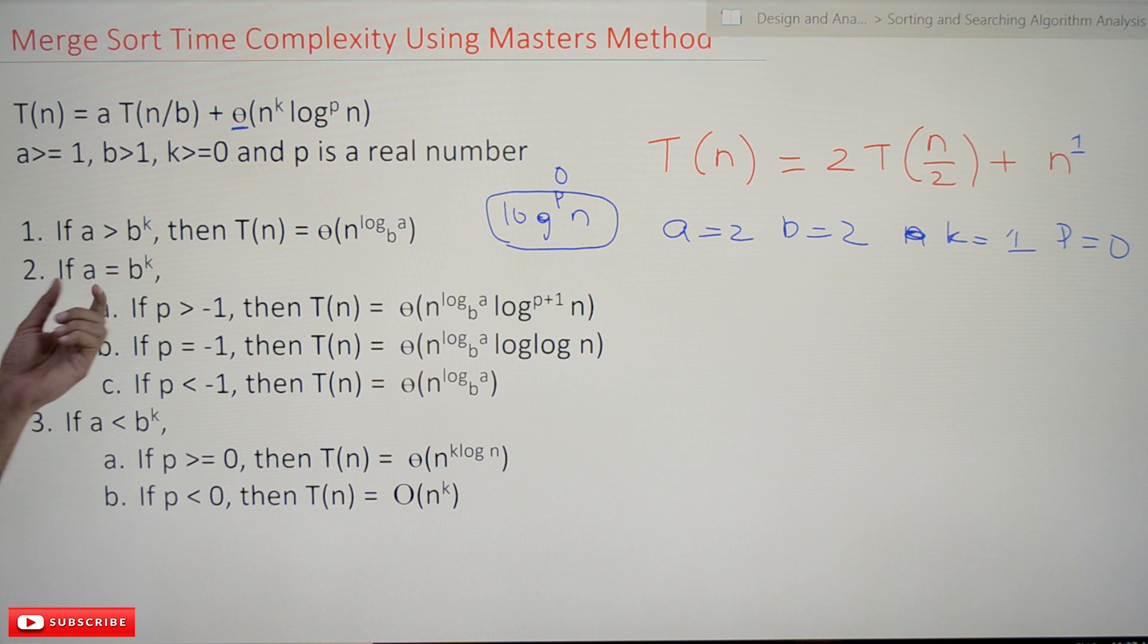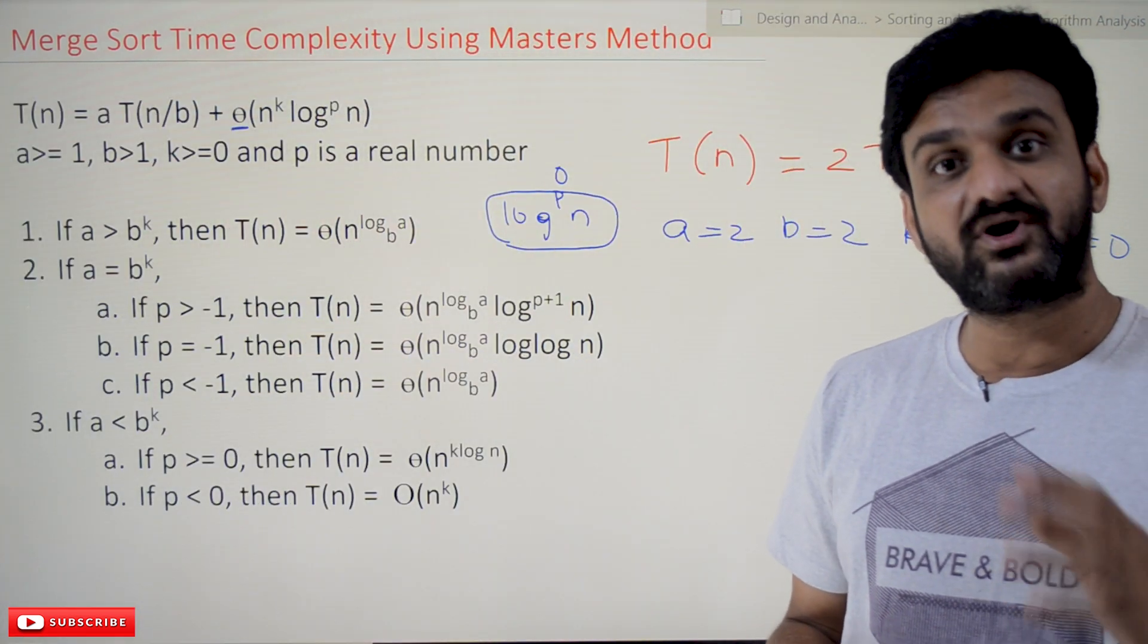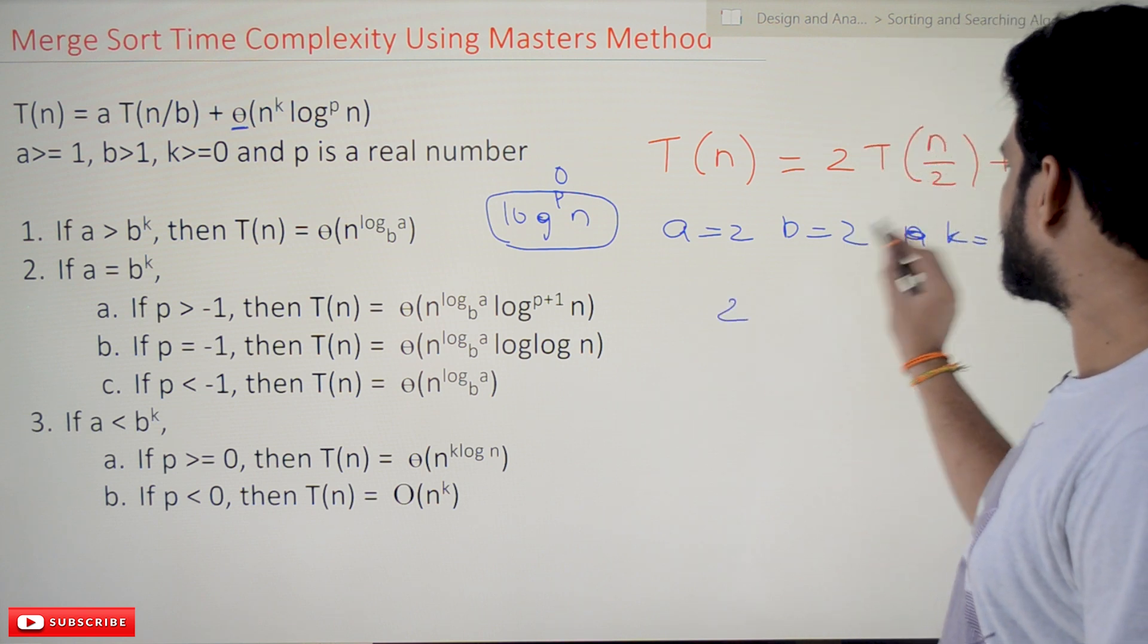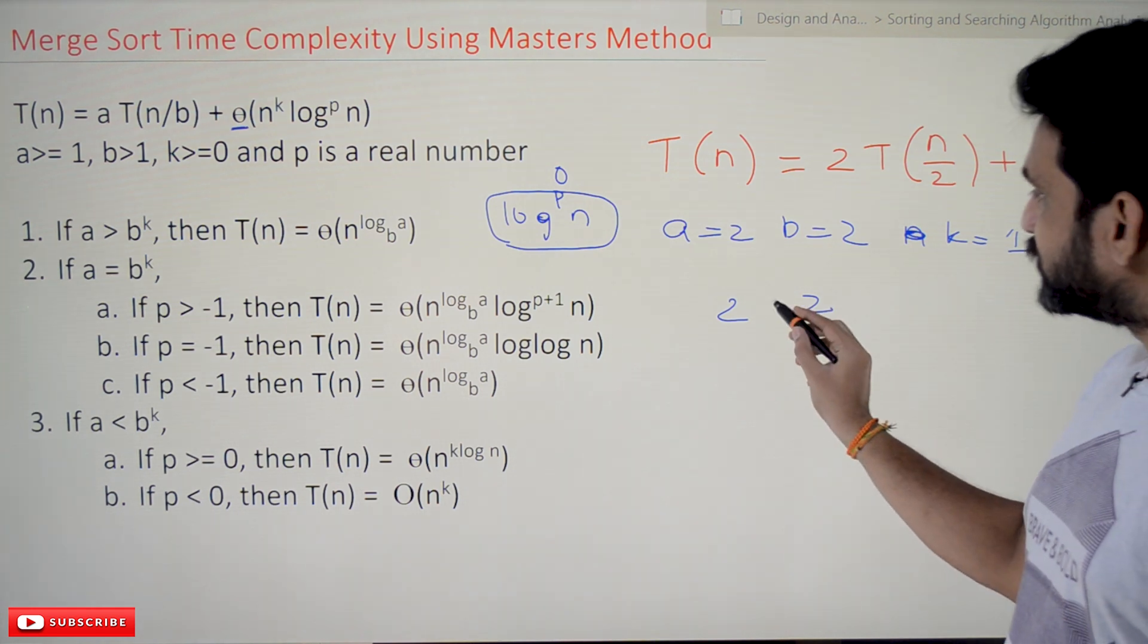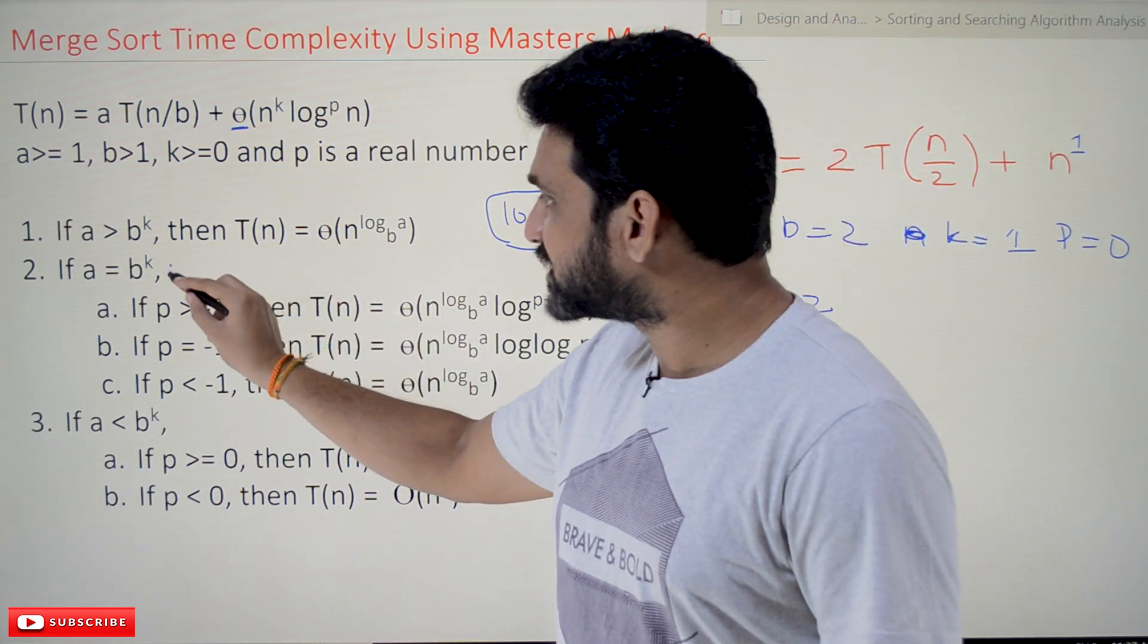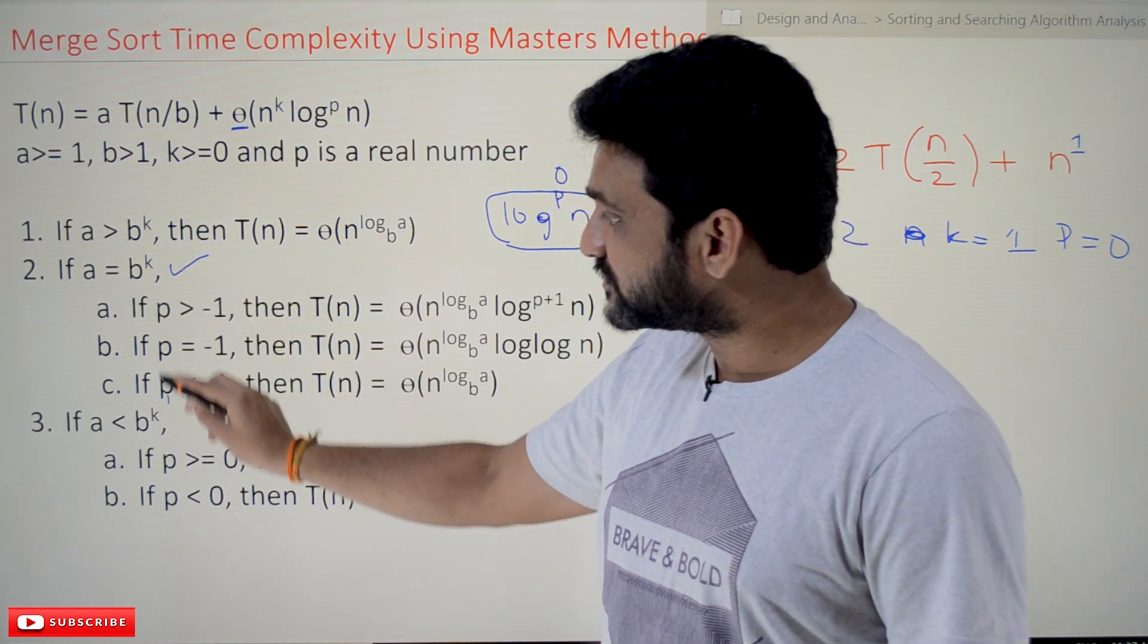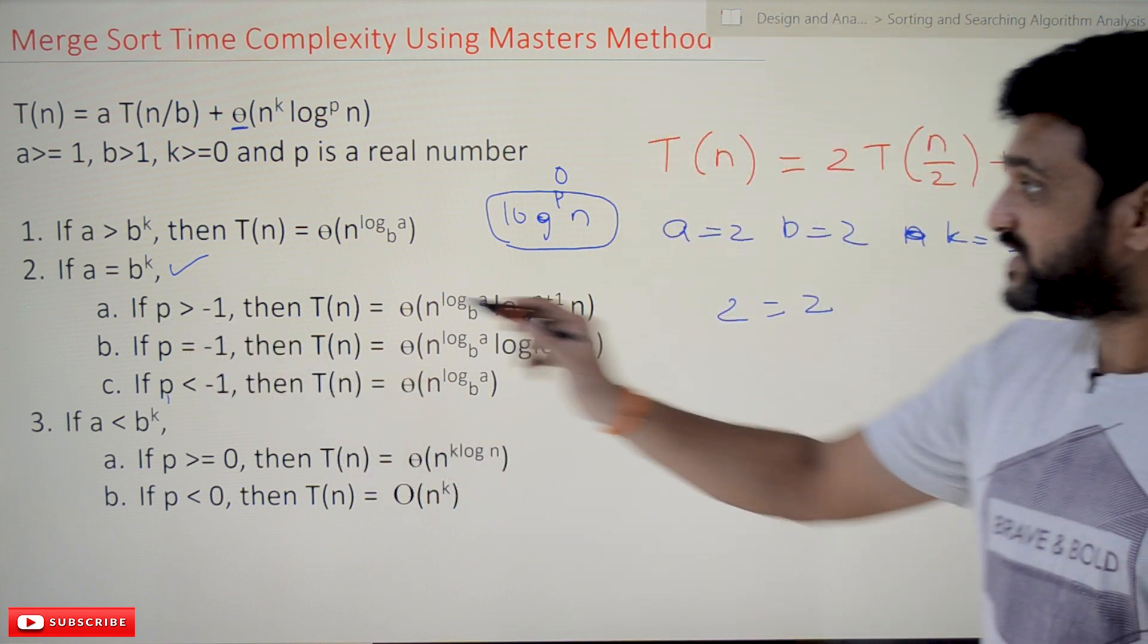Now we have to go for this: we have to find a and b^k and see in which conditions it falls. Is it greater than, equal to, or less than? What is the value of a? 2. b^k means 2^1, which is 2. Now both of them are equal. If both are equal, then this condition is getting satisfied.